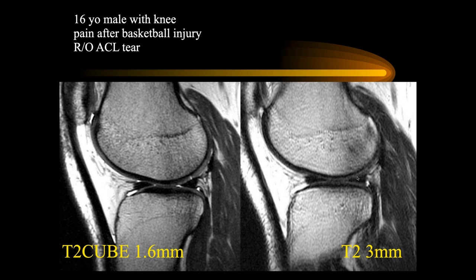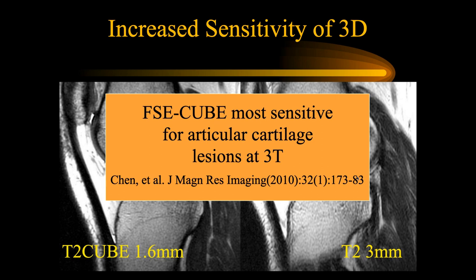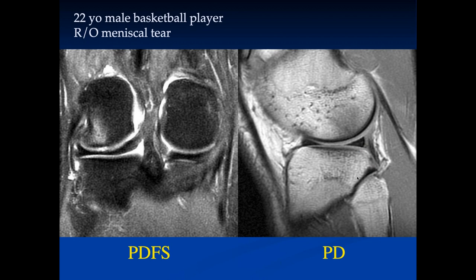Most cartilage disease isn't a pinpoint lesion, but there are cases where you can only see it on thin-cut images. At Tower Imaging, we still do T2 cube images with thinner cuts for slightly higher resolution, though you have to review more images. These images are actually quite sensitive for cartilage defects — not biochemical changes, but actual defects within the cartilage.